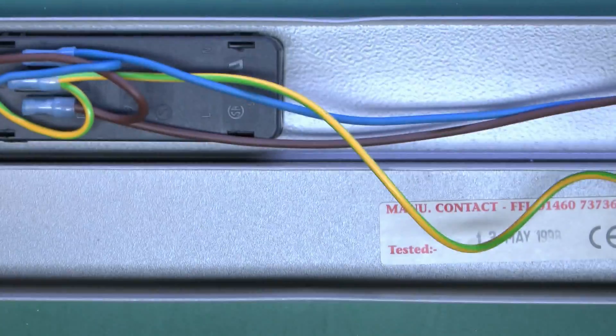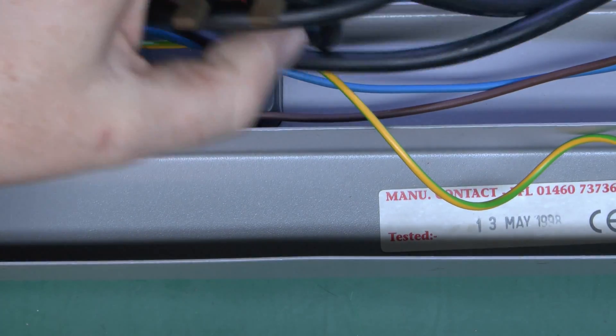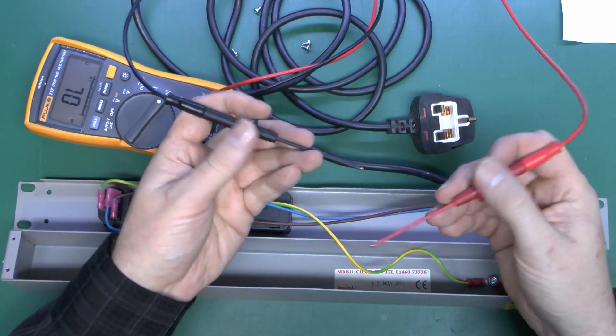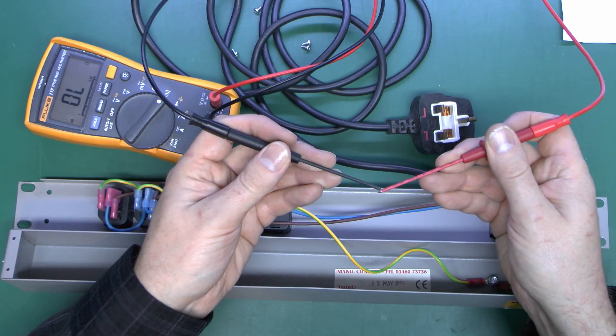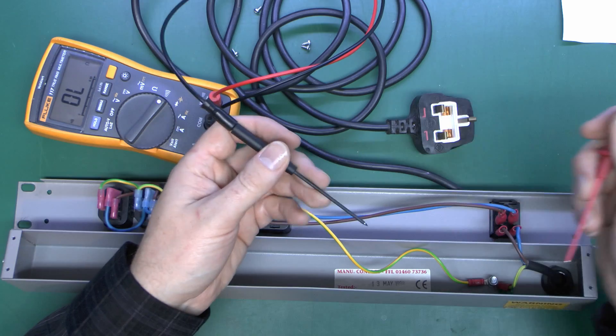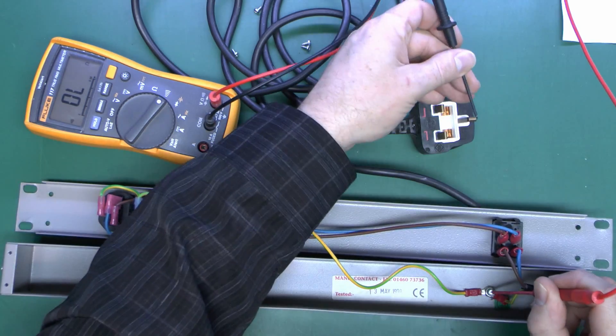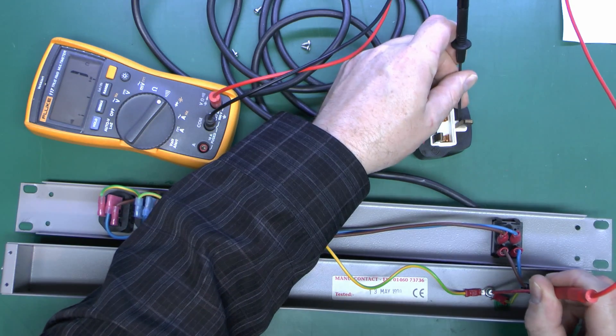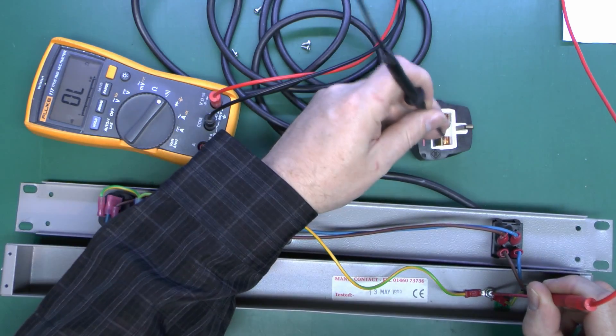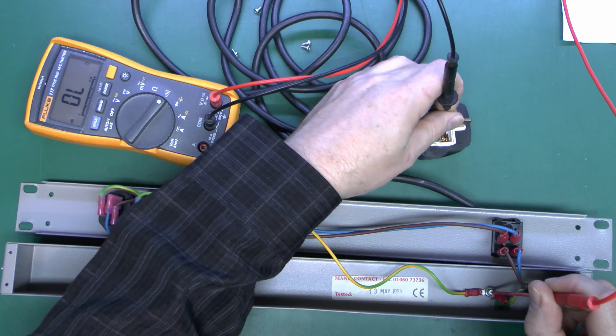So let's just see if this mains lead is actually damaged or defective in any way. I've just got this set to continuity, so just press those together and of course that will beep there. So we should have Earth connected to here from the pin of the plug, which we have. And there should be nothing connected to any of those, obviously.